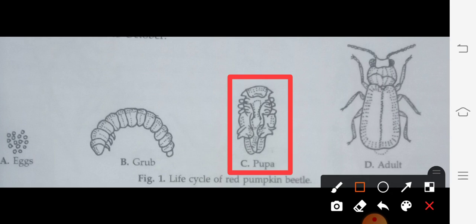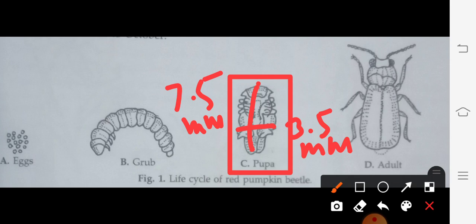The pupa is 7.5 mm in length. The width of the pupa is 3.5 mm. The color of the pupa is pale white. The pupal period is 7 to 14 days.